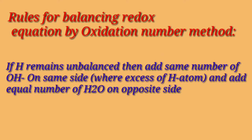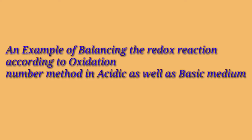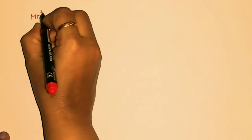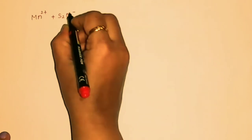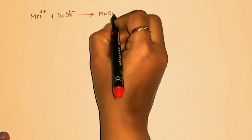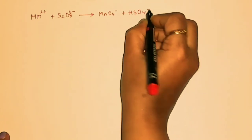Now let us see one example of balancing a reaction using the oxidation number method in acidic medium as well as basic medium. Consider the following equation: Mn²⁺ + S₂O₈²⁻ → MnO₄⁻ + HSO₄⁻.